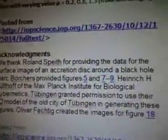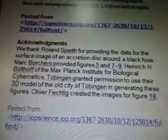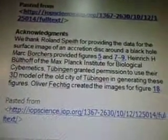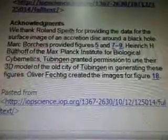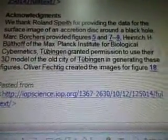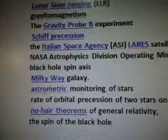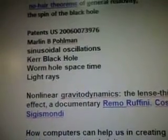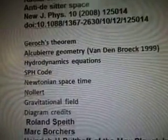We thank Roland Speith for providing the data for this surface image of an accretion disk around a black hole. Mark Borchers provided figures 5, 7, and 9. Heinrich Bülthoff of the Max Planck Institute for Biological Cybernetics, Tübingen, granted permission to use their 3D model of the old city of Tübingen in generating these figures. And Fetch Edge created the images for figure 18. These are all the tags for this. Oh, these are all going to be the tags that go with this when I post it to the blog. I always take out the keywords and put them in the blog post so you know what's on there. So that's the end of that video, and now we can go on to the next one.